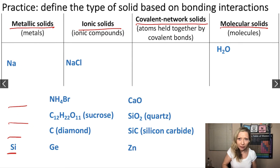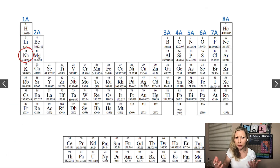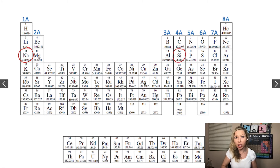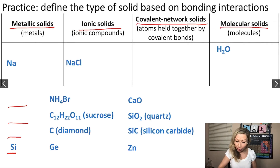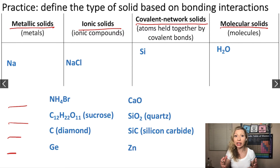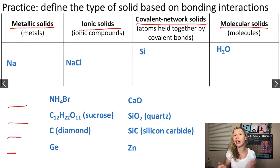What about silicon? Is it a metal? Is it a non-metal? Well, silicon is actually right below carbon. Carbon atoms are bonded together with covalent bonds. And silicon, although it is a metalloid, is going to have the same type of covalent bonding as carbon. So silicon is actually a covalent network solid — it is a metalloid, and the atoms in silicon are held together by covalent bonds.